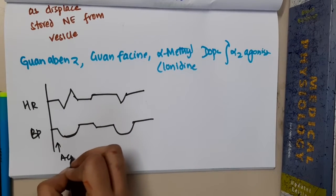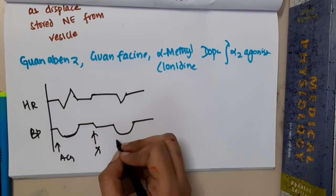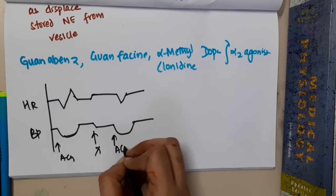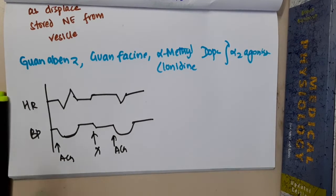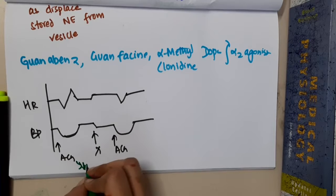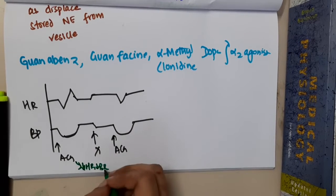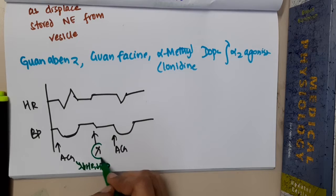Here you have given acetylcholine, here you have given some drug X, here you are giving acetylcholine. Okay, so acetylcholine normally causes—it decreases heart rate, decreases blood pressure. Okay, now you have given some drug X.